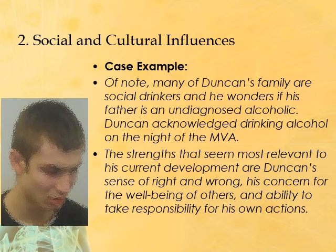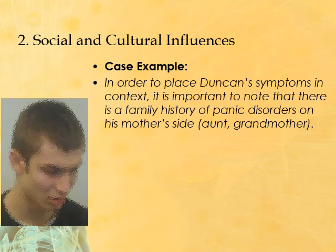The strengths most relevant to Duncan's current development are his sense of right and wrong, his concern for the well-being of others, and his ability to take responsibility for his own actions. Pointing out a client's strengths is important before we move to the provisional diagnosis and hypothesis section, since that section tends to focus more on the client's weaknesses. There is also a family history of panic disorders on his mother's side — both his aunt and his grandmother — giving us genetic predispositions on both sides.